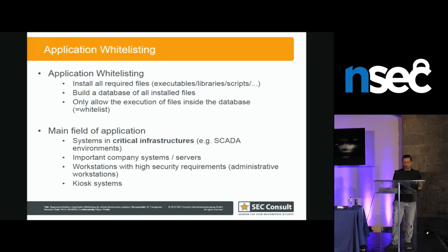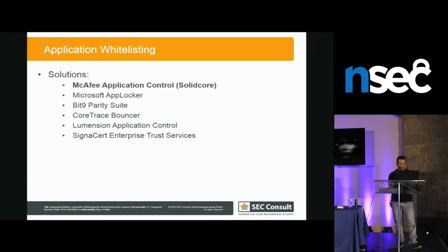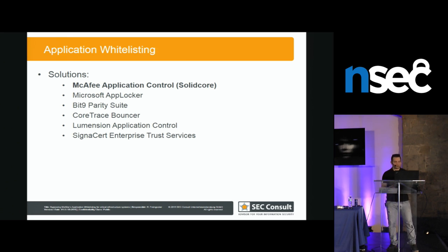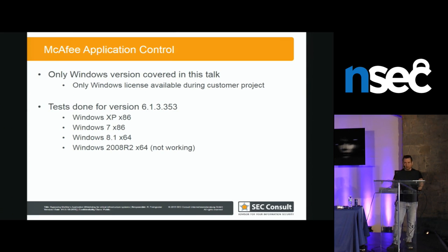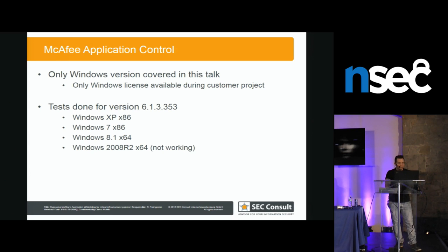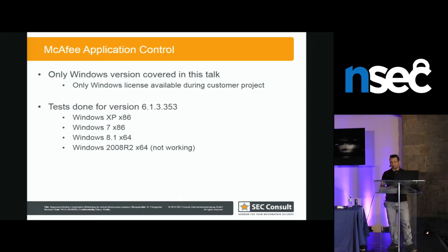We also see this for high-risk security systems like administrative workstations. For example, the Technical University in Vienna uses it for student workstations so students cannot start games or similar things. There are many different solutions. I chose McAfee Application Control — first because of that video, and second because it has additional features that are interesting to discuss. I only covered the Windows version since I only received the Windows license. Version 6.1 was current at that time, mainly focused on client operating systems but working the same on servers. I included Windows XP because in critical infrastructure you often see XP systems even though it's no longer supported.